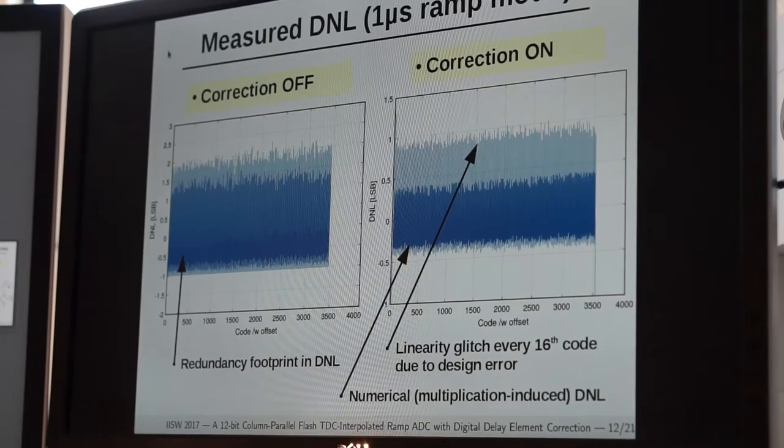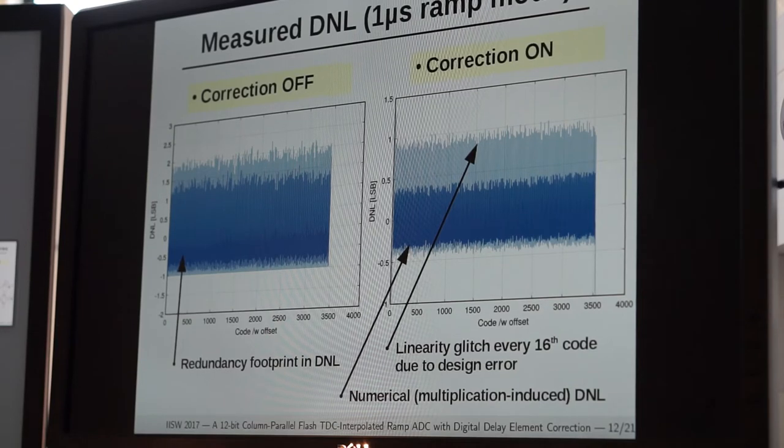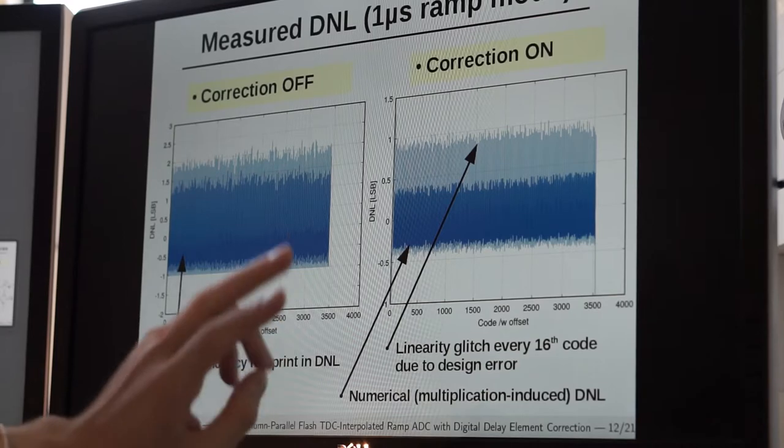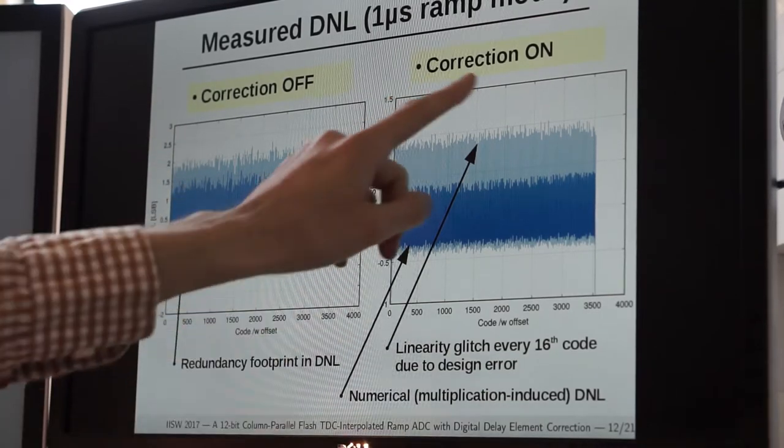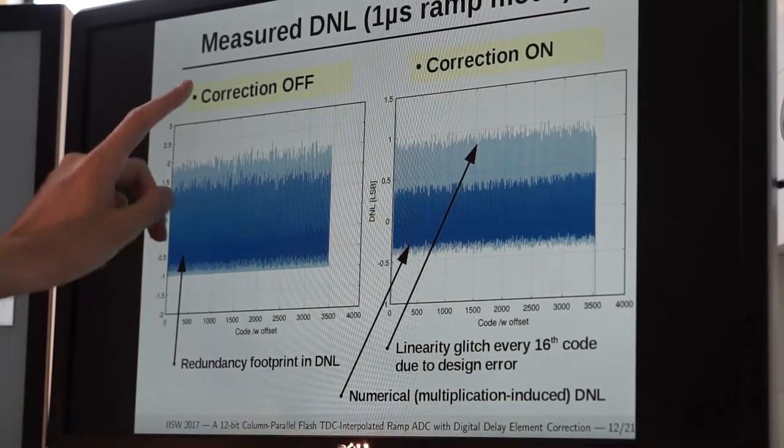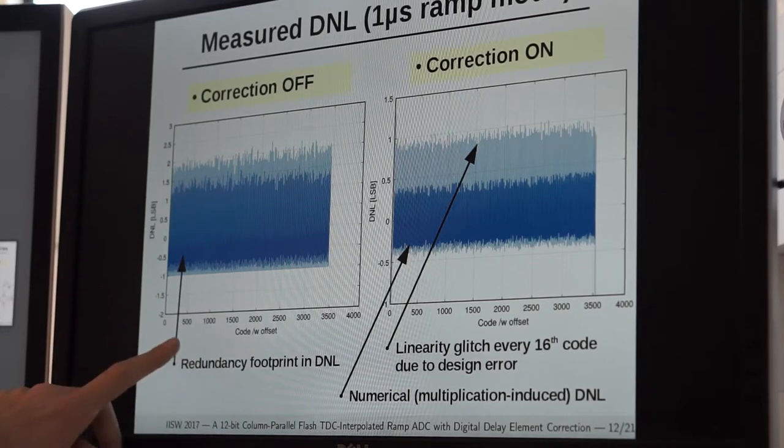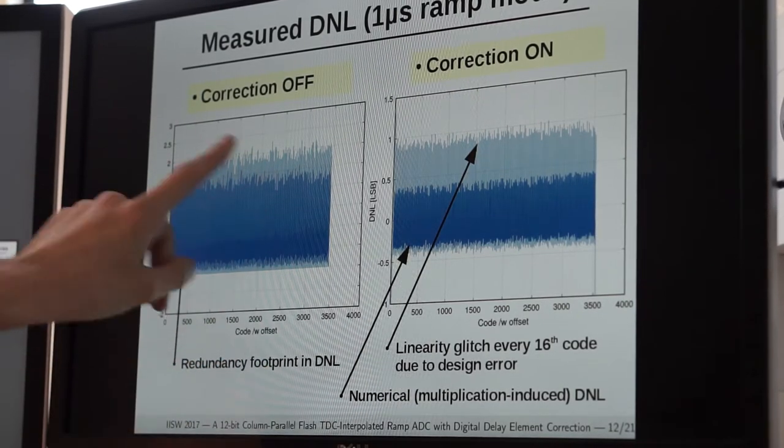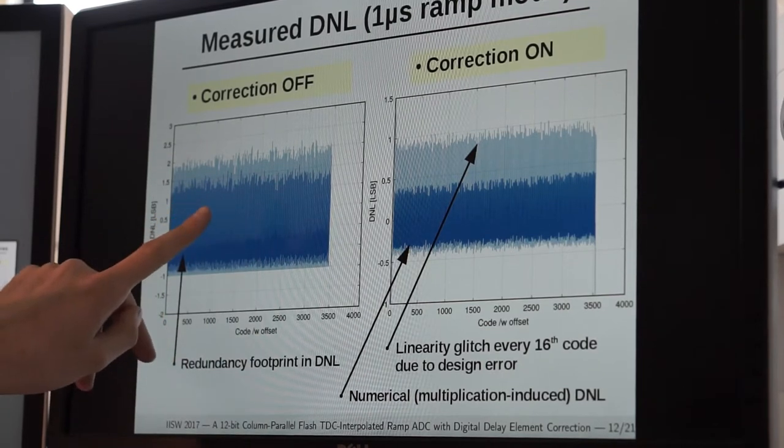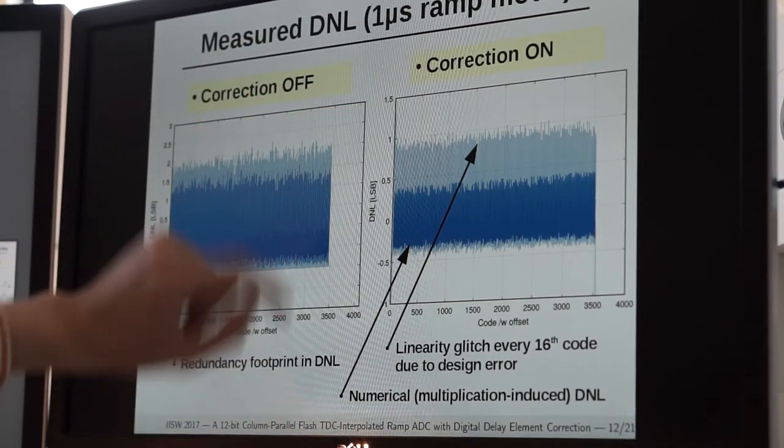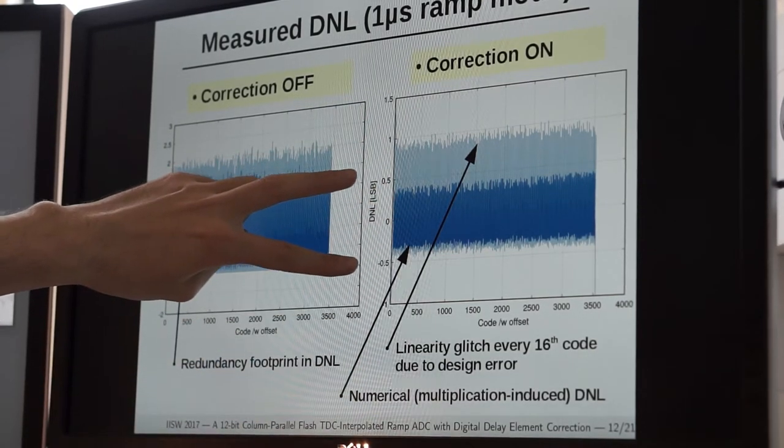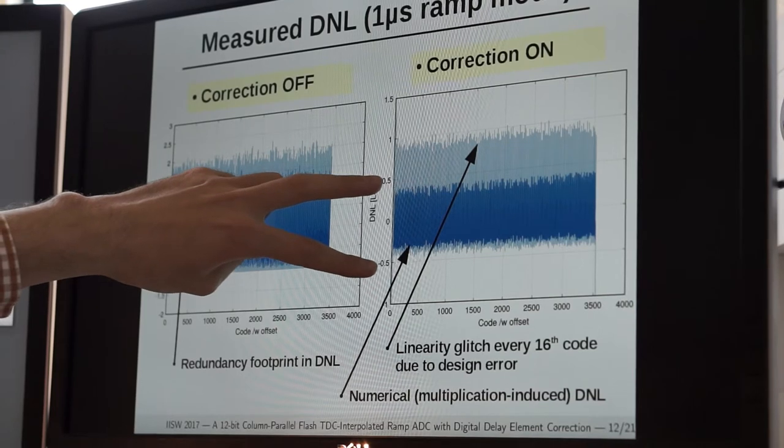What I'm showing right now on the screen are two different differential non-linearity plots - one when the correction is off and one when the correction is on. When the correction is turned off, the DNL is high and you can clearly see the redundancy footprint embedded in the DNL. When we turn the correction on, you might notice two effects.